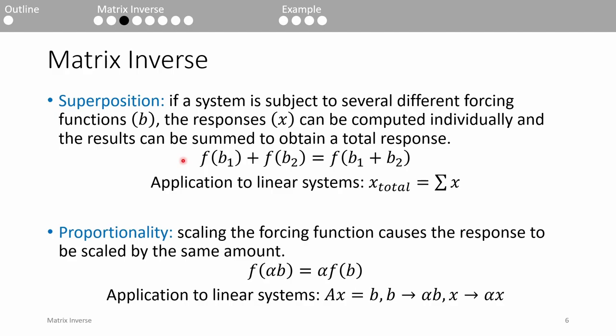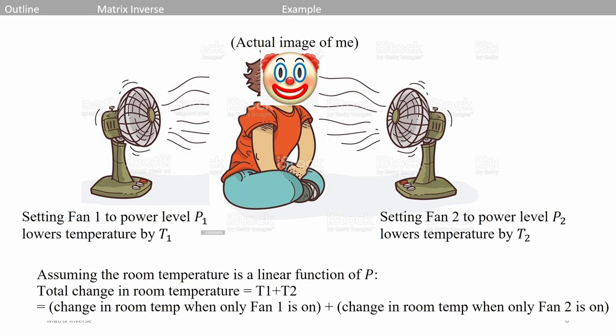Let's say you're sitting in your room on a hot summer day. You want to cool down, so you turn on two fans. If you assume the room's temperature is linearly related to the power of the fans, you can compute the total drop in the room's temperature by combining the temperature drop caused by only one fan and the temperature drop caused only by the other fan.